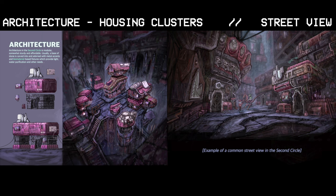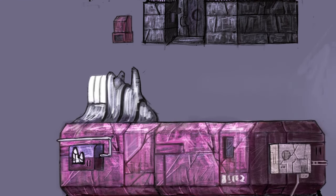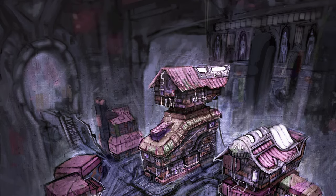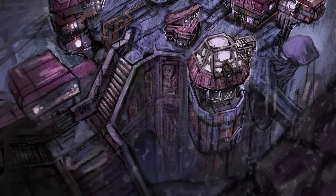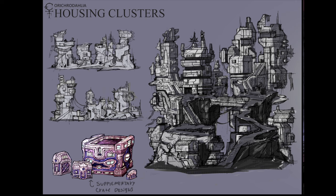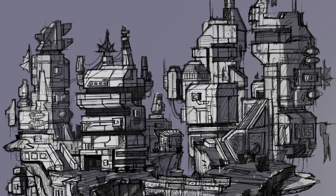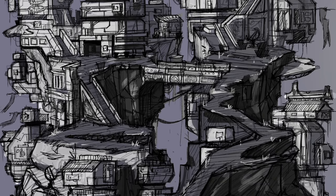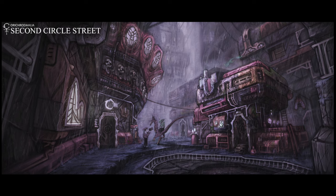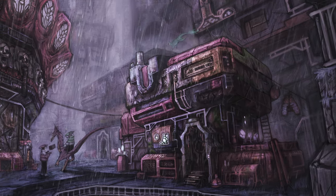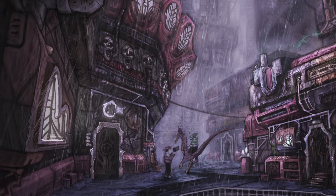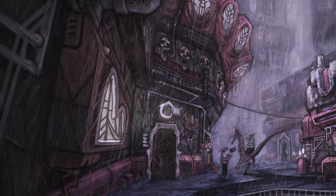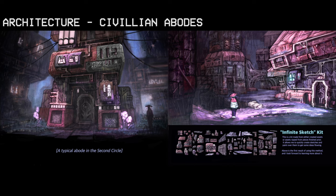Architecture in the second circle is modular, sturdy, and somewhat affordable. Usually a base of stone is carved into and adorned with metal accents and biomaterial-based fixtures, which provide light, water purification, and other needs. Here are a few sketch examples of how housing clusters fit together for my portfolio, and here's a painting of what it could look like to walk around on these streets. I imagine a lot more lively things happening — more people, more creatures — this is just a bit of a time constraint. And here's an exterior for what the common civilian abode would look like.